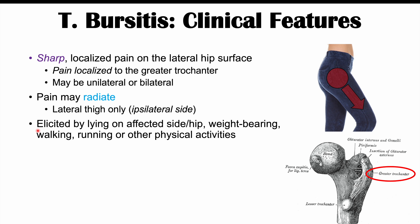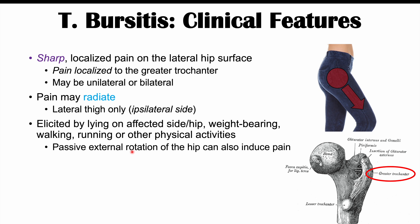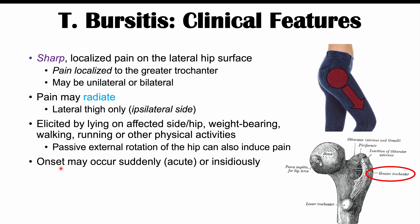Pain can be elicited by a variety of activities including lying on the affected side or hip, weight bearing — just standing can cause pain in the greater trochanter area — as well as walking, running, and passive external rotation of the hip. The onset can either be acute — occurring suddenly — or insidious, coming and going very slowly, with the patient gradually noticing pain at the greater trochanter area over time.